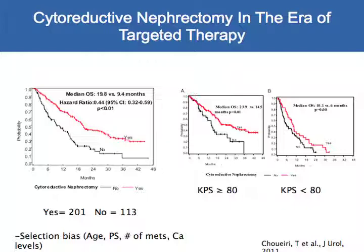Looking at the Kaplan-Meier curves separated by performance status — good versus poor — there didn't seem to be a benefit in those with poor performance status. So it's difficult to fully interpret this, but it gives us some idea that if patients are surgical candidates, it's possible they'll still benefit from removing the kidney in the setting of targeted therapy.